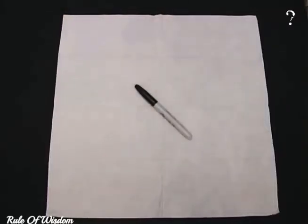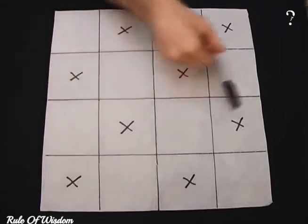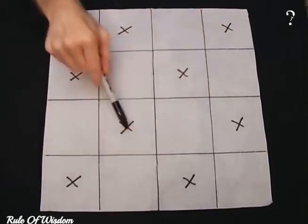To bet, you need a square paper napkin and a marker pen. Draw a 4x4 grid on the paper, add 8 crosses like this.